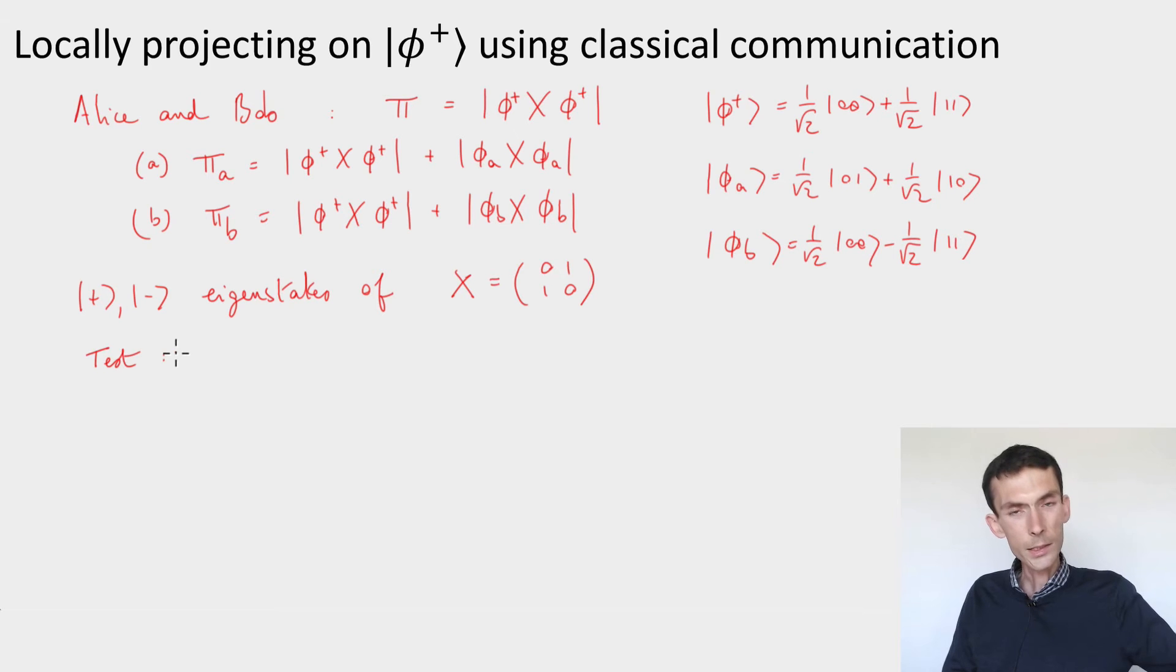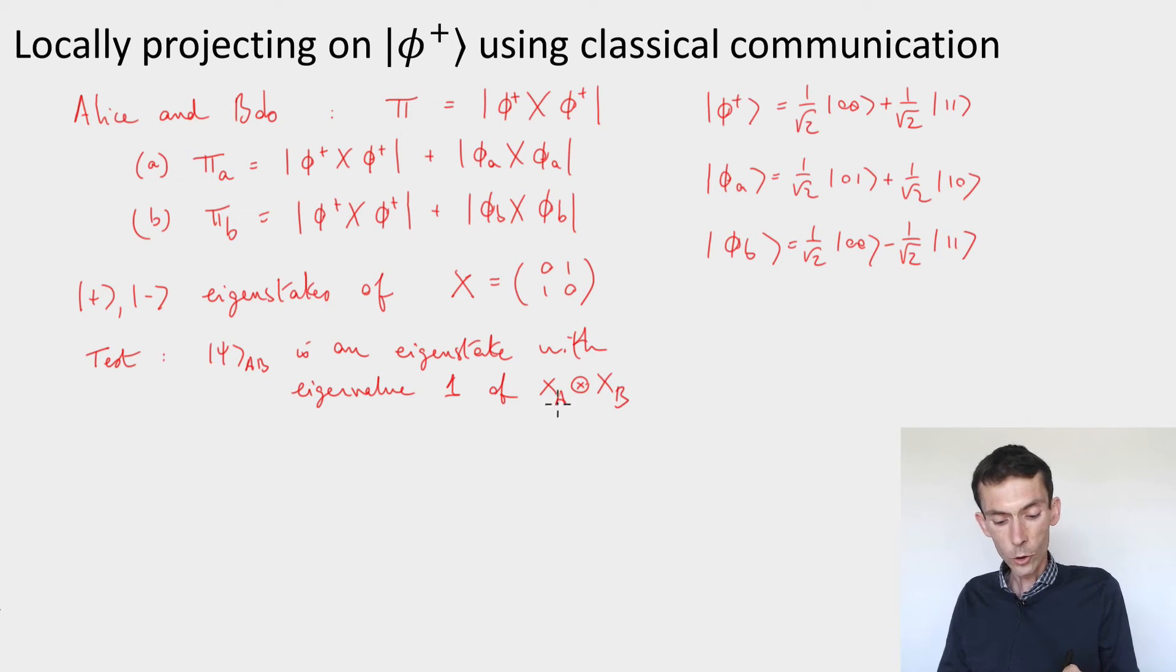So what the test that corresponds to measuring in the Hadamard basis and checking agreement of outcomes is doing is the following. It's testing that the state |ψ⟩ that Alice and Bob are sharing, verifying that when you make the measurement in Hadamard basis, you get the same outcomes. This is equivalent to checking that the state that you're sharing is an eigenstate with eigenvalue 1 of the corresponding tensor product of Pauli operators.